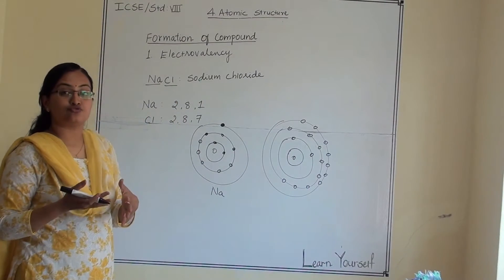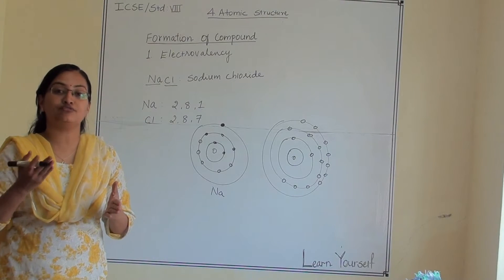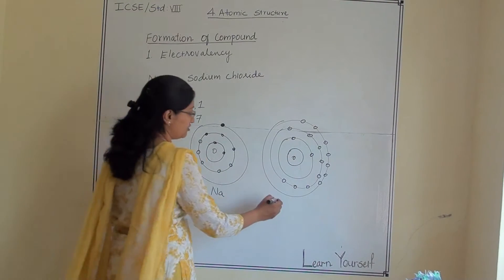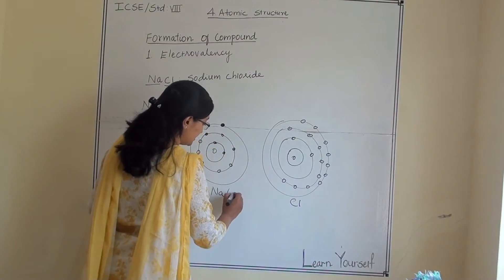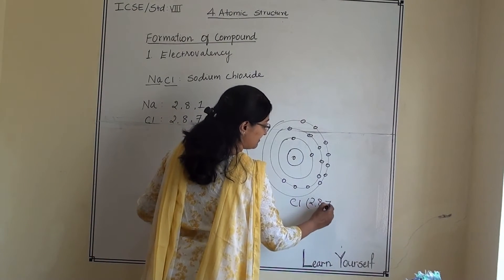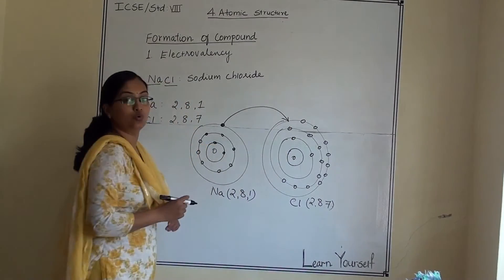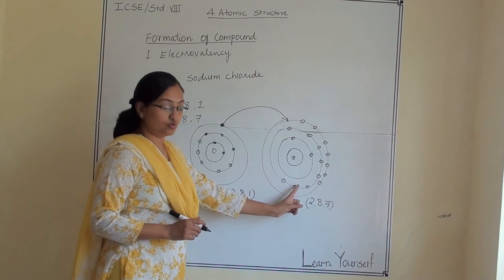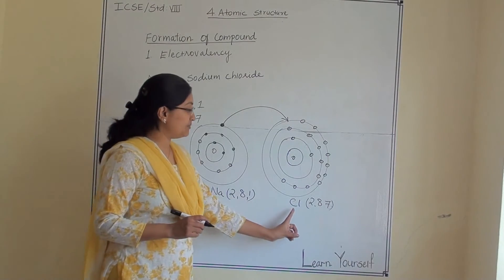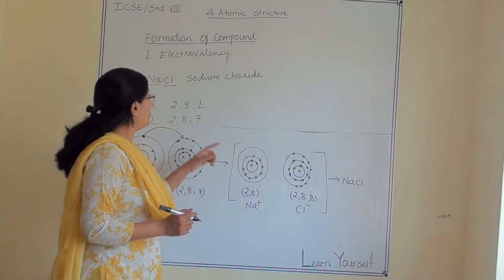As shown, sodium follows the nearest noble gas electronic configuration like neon. So sodium — with configuration 2, 8, 1 — will donate 1 electron, and chlorine — with configuration 2, 8, 7 — will follow argon's configuration. Sodium donates 1 electron to chlorine, and their electronic configurations change: sodium becomes 2, 8, and chlorine becomes 2, 8, 8. This is the formation of the NaCl compound via electrovalency.